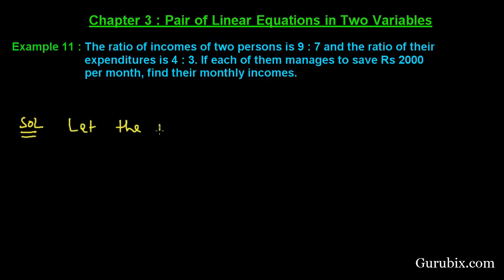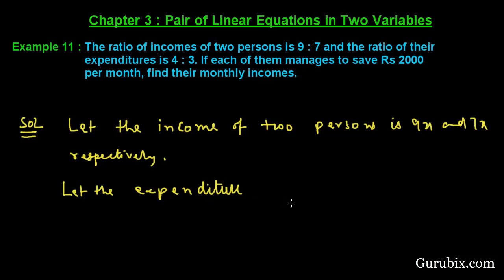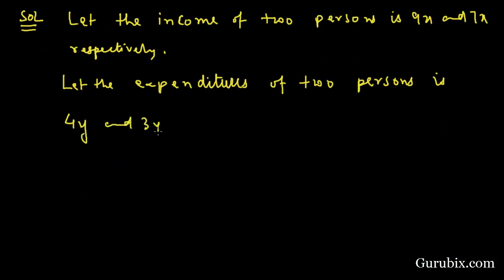First of all, we shall let the income of the two persons be 9x and 7x respectively. Similarly, we shall let the expenditure of the two persons be 4y and 3y respectively. Now we can form the system of linear equations using the information given in the question.